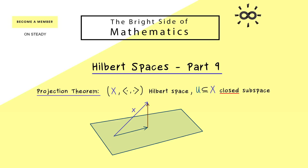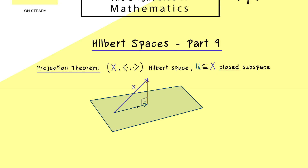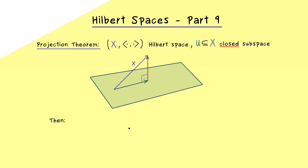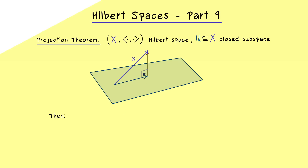The claim of the projection theorem is that every vector in x can be decomposed into two parts. One part is a vector inside the subspace u, and the other part is exactly orthogonal to the whole subspace u. Hence the important thing here is that we have a right angle between both components. Therefore this vector inside the subspace u is called the orthogonal projection of x onto u.